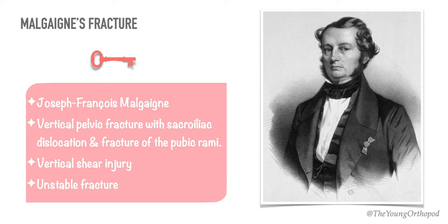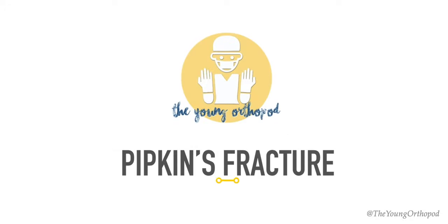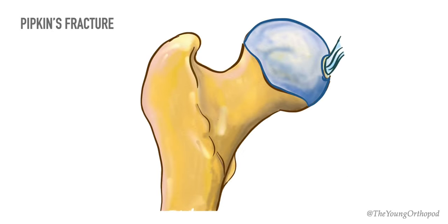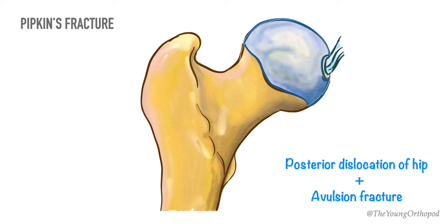The eponymous terms of Duverney fracture and Malgaigne fracture are now falling into disuse, as both fracture types were identified before radiographic interpretation was available. Present-day imaging techniques and the latest pelvic injury classification systems have made these eponymous terms less relevant. Pipkin's fracture is classically described as posterior dislocation of the hip with avulsion fracture of a fragment of the femoral head by the ligamentum teres. The mechanism of injury is impact to the knee with the hip in a flexed position, as seen in the dashboard injury.